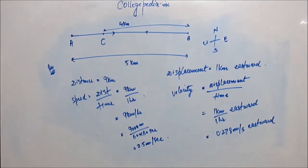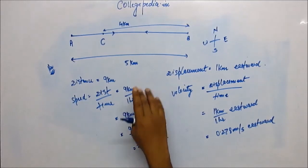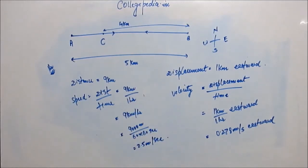Now suppose I ask you: was this speed of 2.5 meters per second actually the same at each and every point throughout the journey? Of course not. This 2.5 meters per second is actually an average speed over the total distance of 9 kilometers.